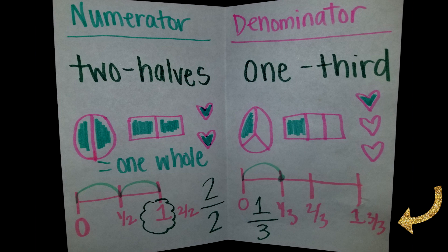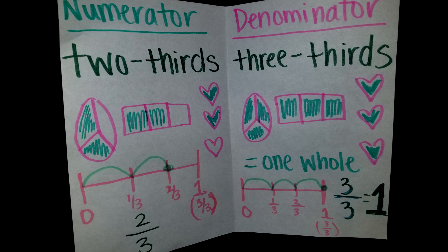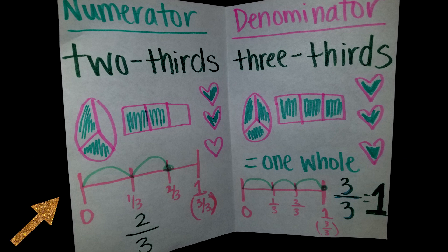Our example says only one third, so we go back to our zero and jump just one jump, which lands us on one third. Now let's look at our other page — we have examples of two thirds and three thirds. On two thirds, our circle, rectangle, or hearts have three pieces, but our numerator says two, so only two of them are going to be shaded in, leaving one empty. On the number line, you started with your sideways eye from zero to one, broke it into thirds, so three equal sections. But when we go to do our jumps, we do only two jumps — one jump, then two jumps — and you're now on two thirds.